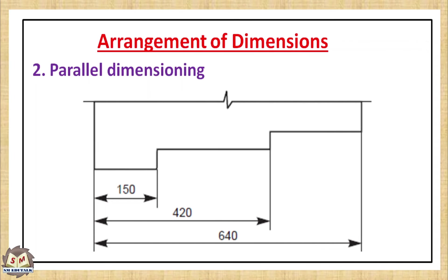Number two, parallel dimensioning. When many dimension lines are measured in the same direction from a common feature - that is a surface or an edge of the part - then this method of indicating all the dimensions from the same feature is called parallel dimensioning. The dimension lines are parallel to each other and equally spaced.